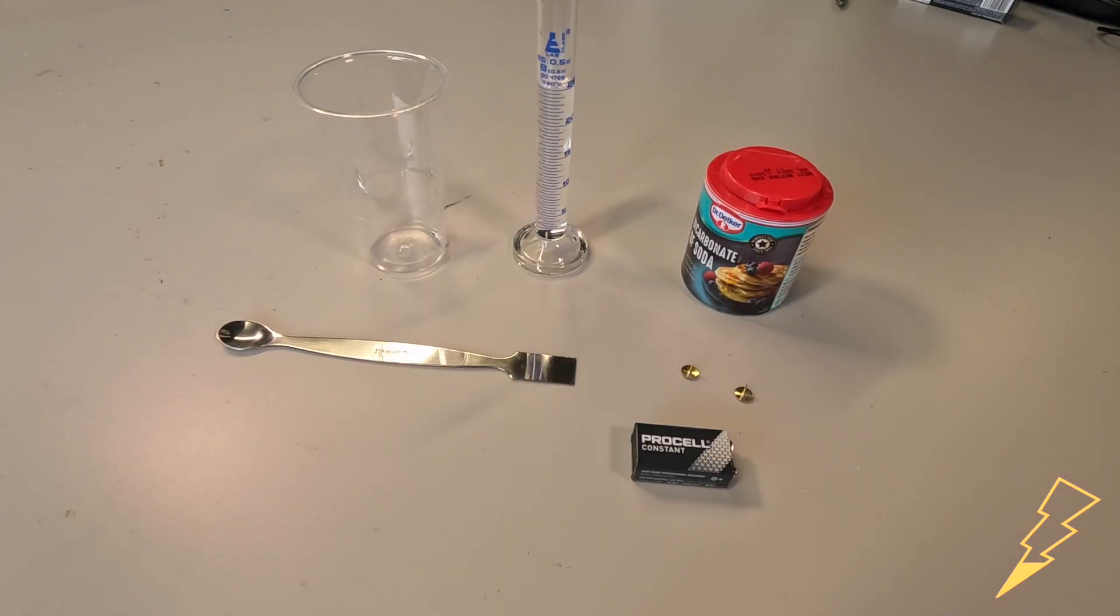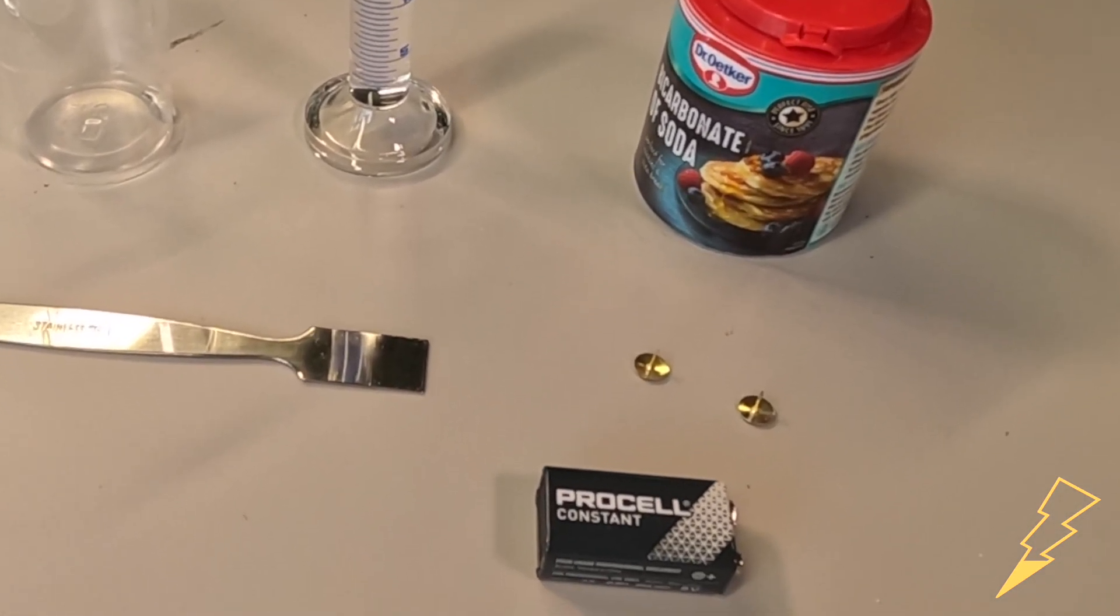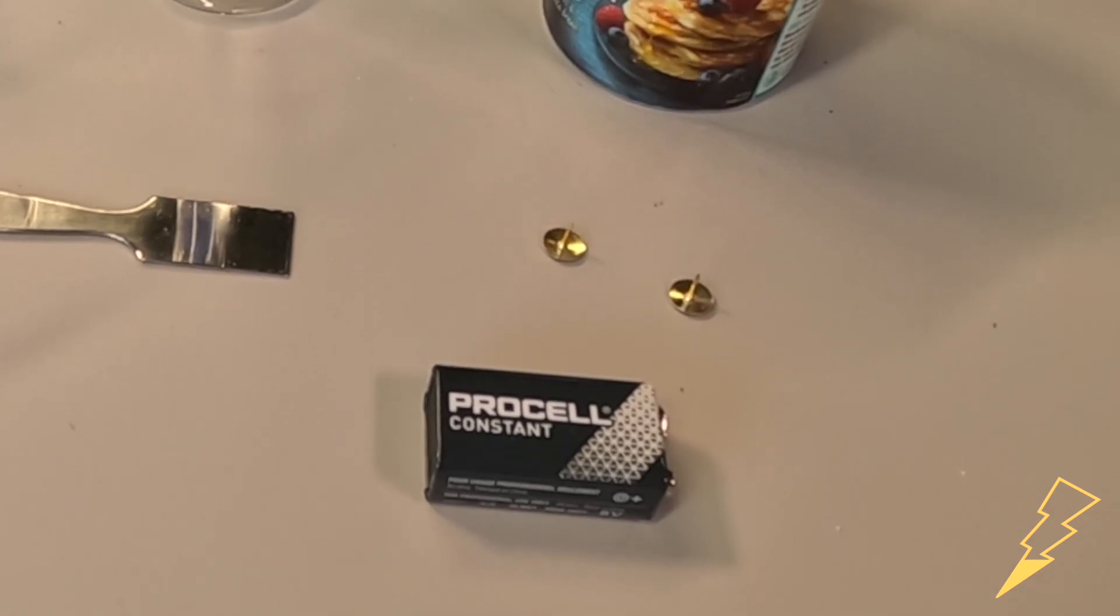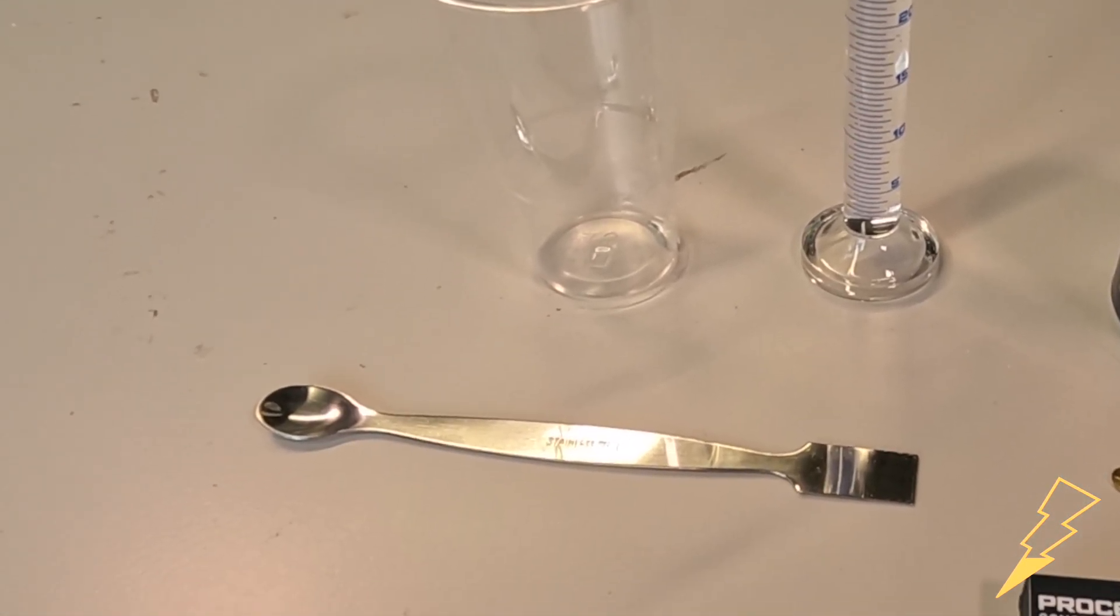So for the bubble machine you'll require some bicarbonate of soda, two drawing pins, a nine volt battery, some water, a plastic cup, and either a spatula or a spoon.